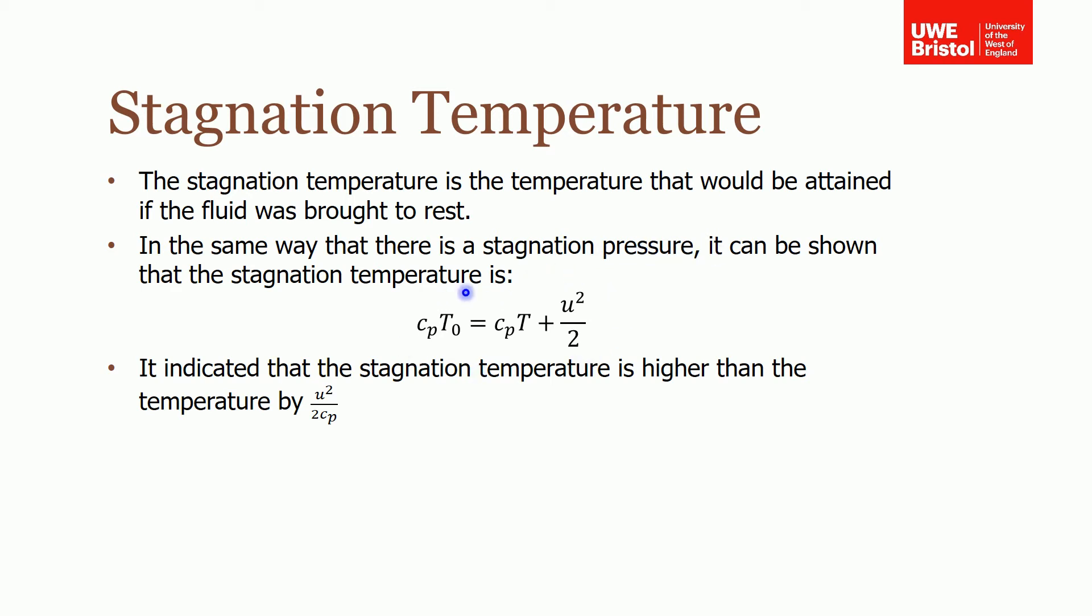It can be shown that CP*T0, the stagnation temperature, equals CP*T plus u²/2, where u is the velocity of our fluid. You can see that the stagnation temperature is higher than the actual temperature by u²/(2CP).